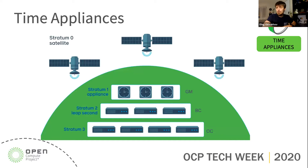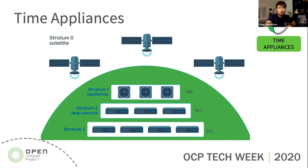Before we dive into any technical details, let's slowly go through the basics. This is our current NTP setup in a data center. We have NTP starting with satellites above us — they're treated as stratum zero. Then there is stratum one, which is what we're discussing here: those are time appliances, acting as stratum one in NTP and as Grandmasters in the PTP world.